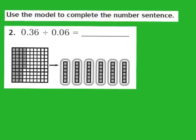Step number 1 is going to be to shade decimal models to represent the dividend. For question 2, our dividend is 36 hundredths. They've already shaded in 36 hundredths in our model — we have 10, 20, 30, and then 6 more of those hundredths shaded in, representing our dividend of 36 hundredths.